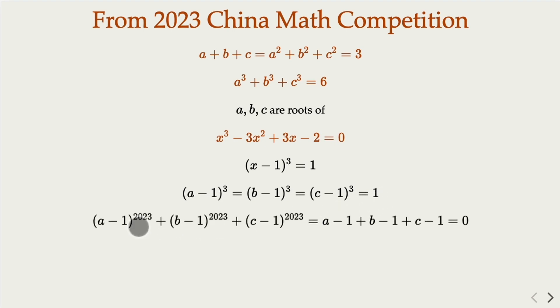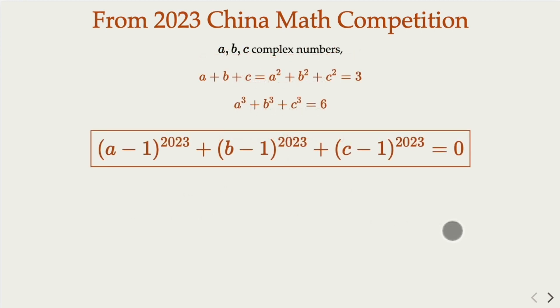So we try to find this. This would be straightforward, because 2023, you have multiply of 3 here. 2022 is multiply of 3, so you're left with 1 here. So everything here is going to be, you just have the power of 1. And you add it up, and A plus B plus C equals 3, 3 minus 3 equals 0. So the final answer is 0.